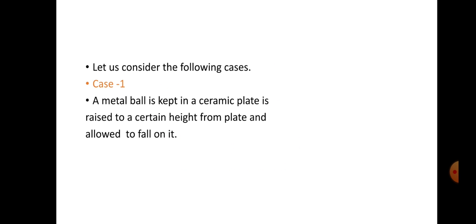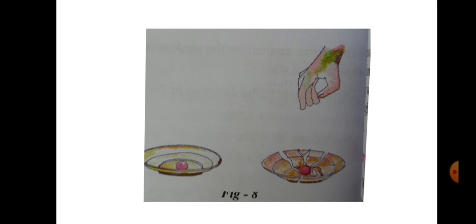Here case 1. A metal ball is kept in a ceramic plate, is raised to a certain height from plate and allowed to fall on it. If you observe these two pictures, in the first picture, metallic ball is raised to some height and allowed to fall on the ceramic plate.